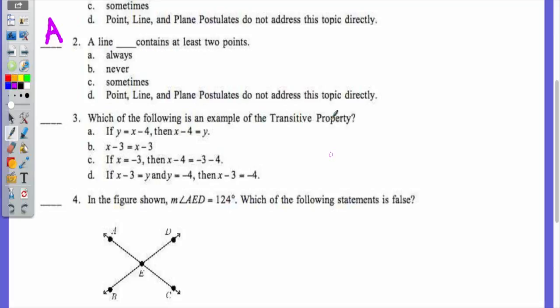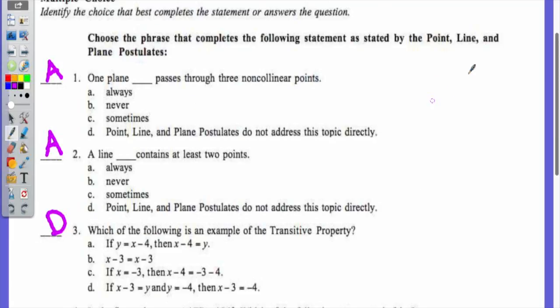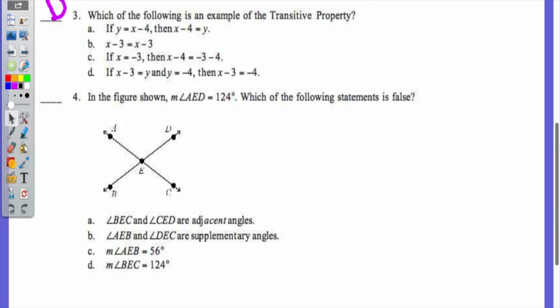Which of the following is an example of the transitive property? D. If X minus 3 is equal to Y, and Y is equal to negative 4, then X minus 3 is equal to negative 4. And moving on. It doesn't want to move on. Sometimes you got to move on in life. Okay, there we go.